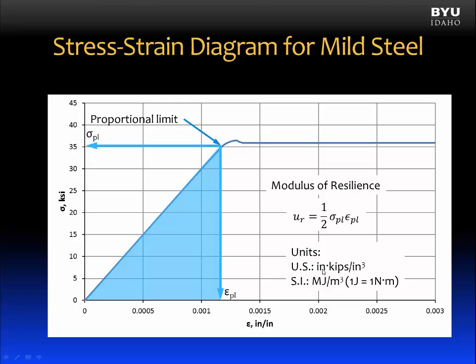The units for modulus of resilience, or strain energy density, are inch-kips per cubic inch in US units, and in SI units, millijoules per cubic meter, where one joule is equal to one newton-meter.